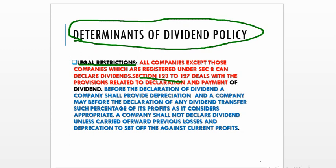Before the declaration of a dividend, the company has to adjust depreciation. Before declaring any dividend, the company must transfer such percentage of its profit as it considers appropriate to the reserves. A company cannot declare dividend unless it adjusts and sets off the carried-forward previous years' losses and depreciation against the current profits.